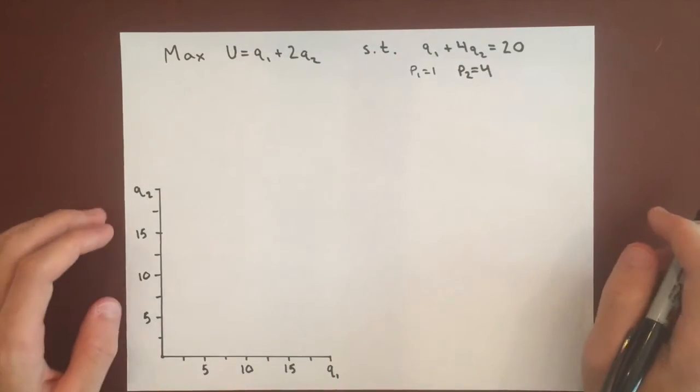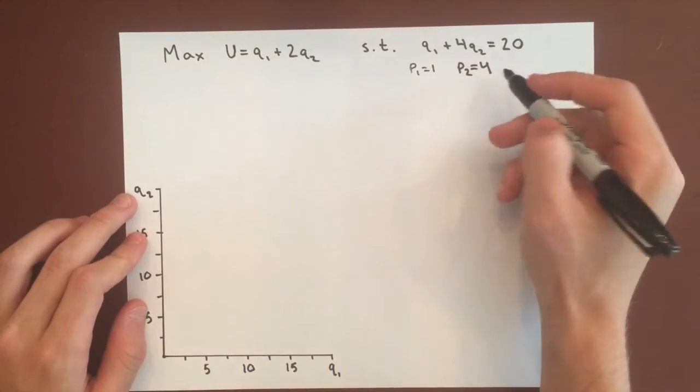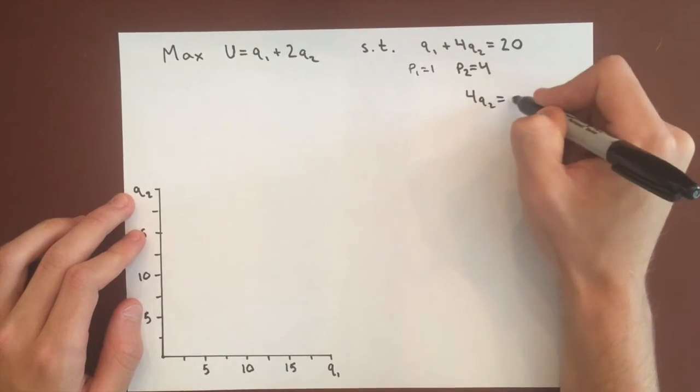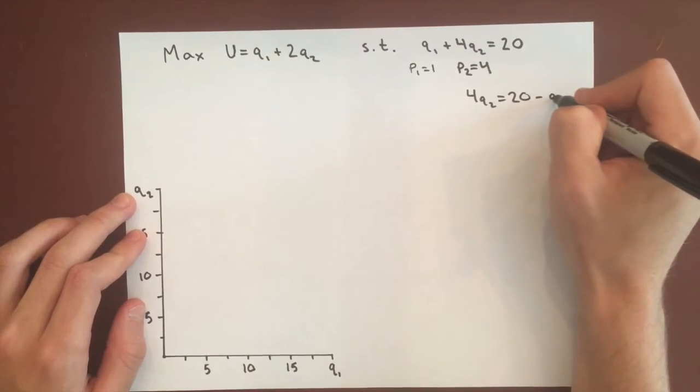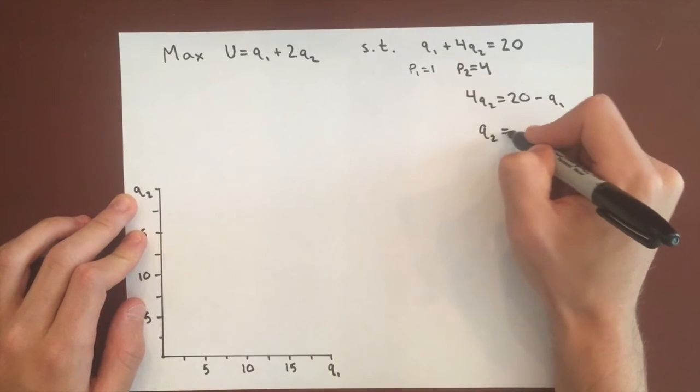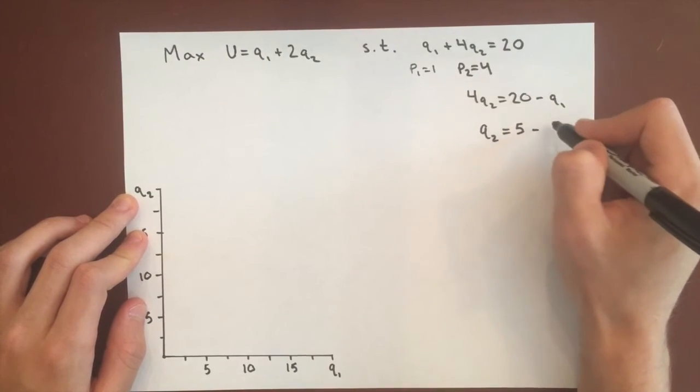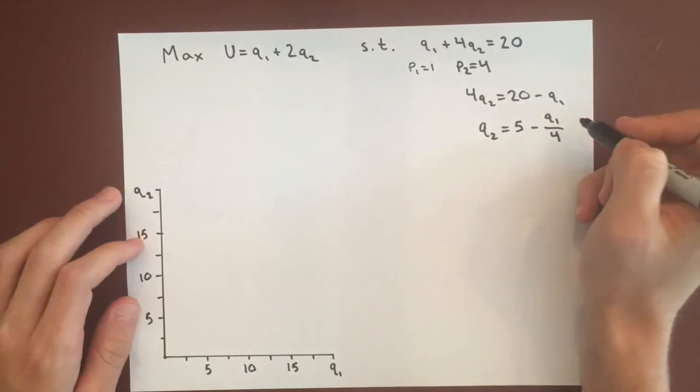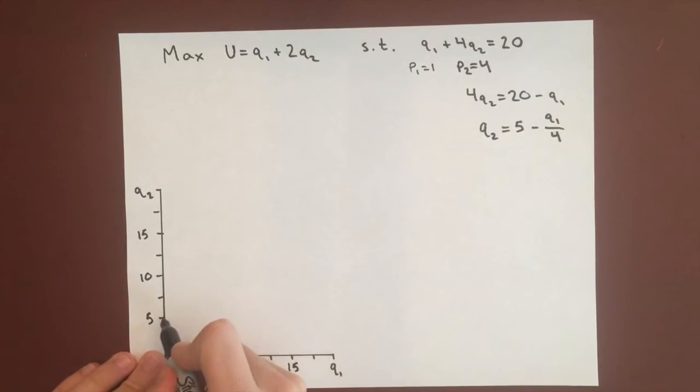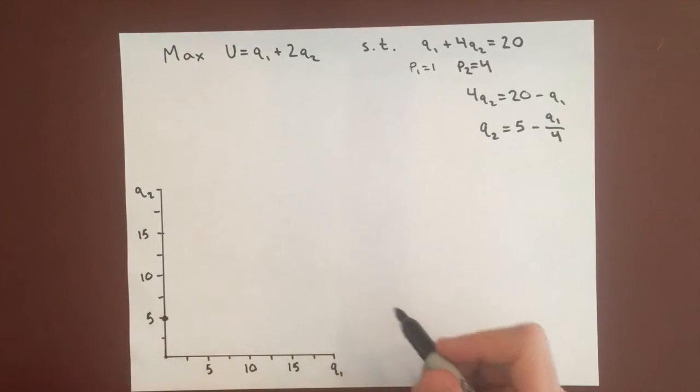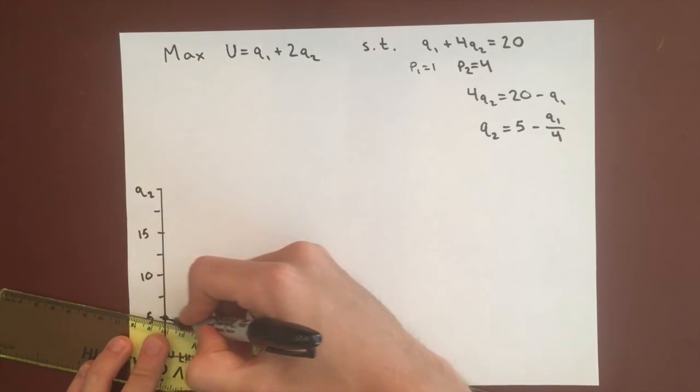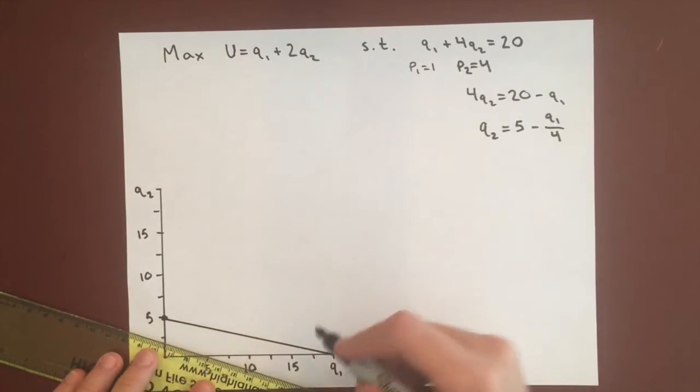We'll begin by drawing the budget constraint first. Solving for Q2 we get 20 minus Q1, so Q2 equals 5 minus Q1 over 4. We can draw that here. The y-intercept is 5 and the x-intercept will be 20, with a slope of negative 1 fourth.